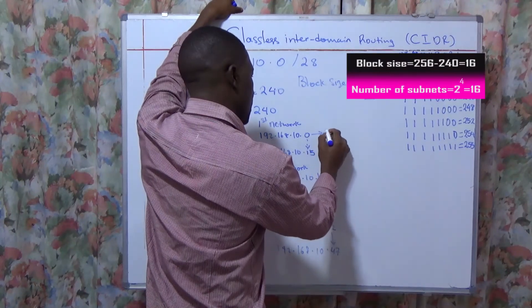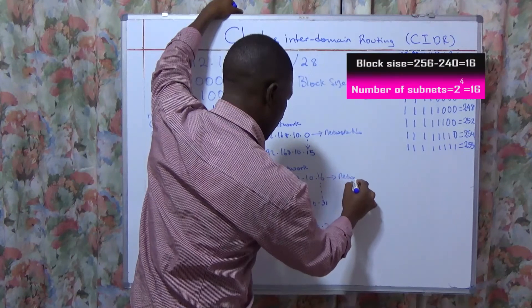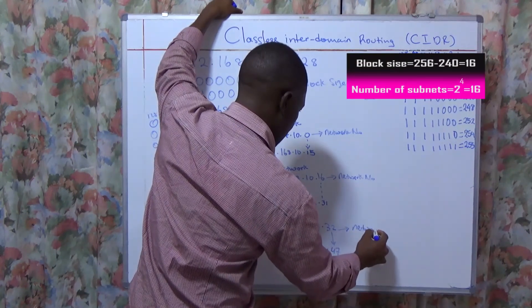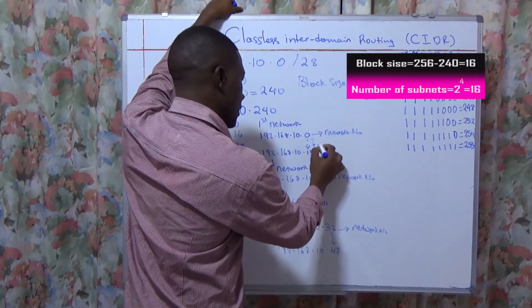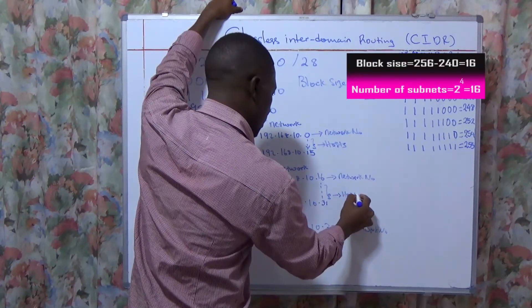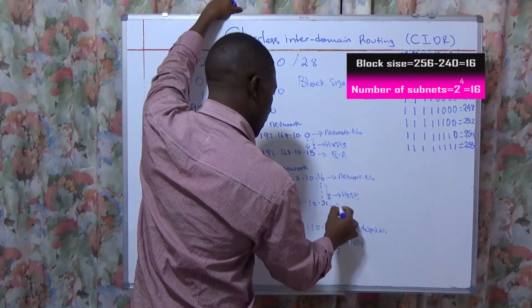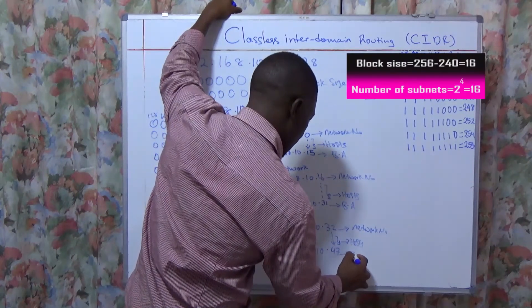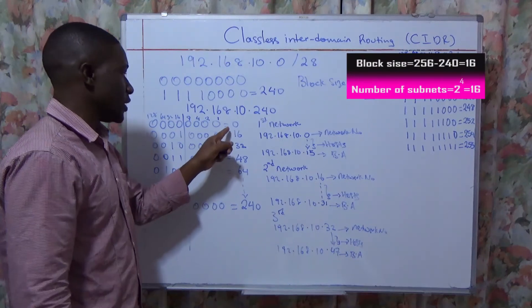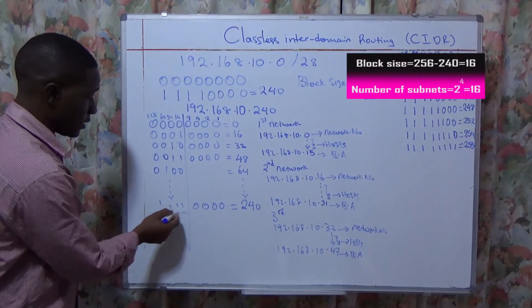This is the network number, and this is also a network number. Here you will have the hosts, hosts, hosts. And this will be our broadcast address, broadcast address, and broadcast address. We are going to have the following subnets: subnet 1 is .0, the next subnet is 16, the next subnet is 32, the next subnet is 48, up to the last one.